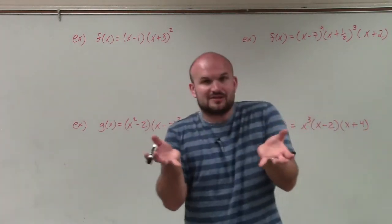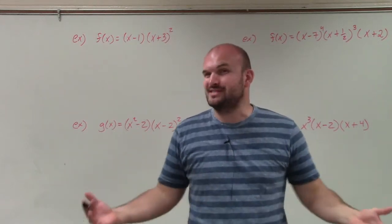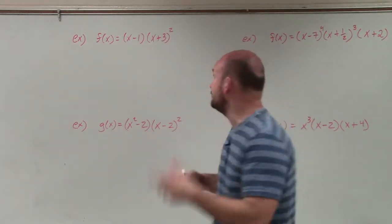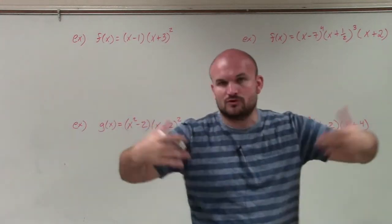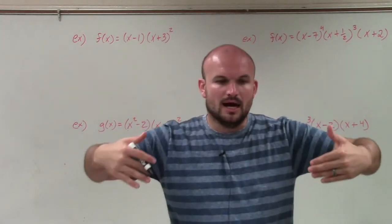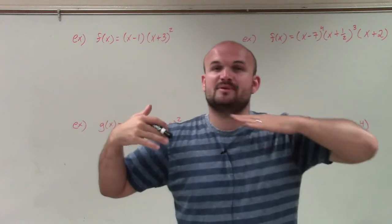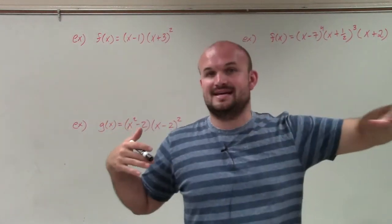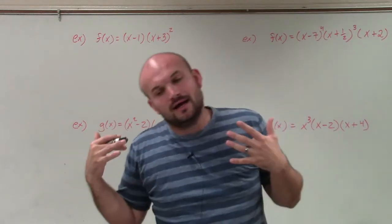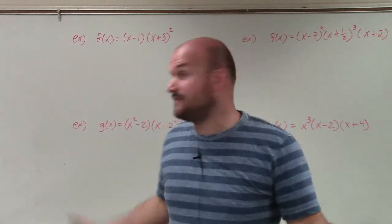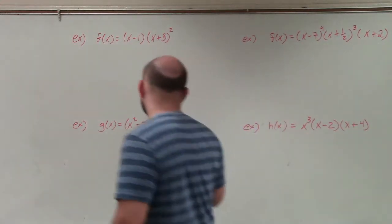Since the factors are multiplied by each other, to solve we're going to use the zero product property. The zeros, or the roots, of the polynomial are going to be where the graph crosses the x-axis. That is going to be where your output value, which is your f(x) in functions, is going to be zero.